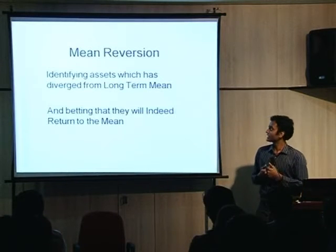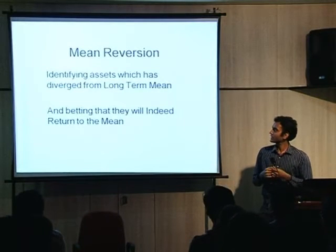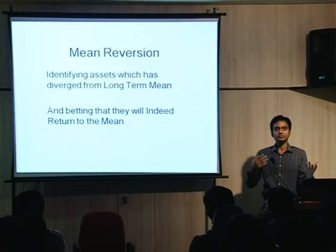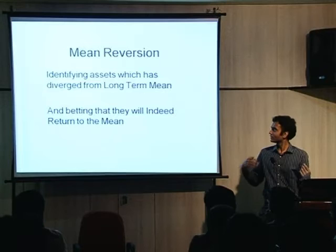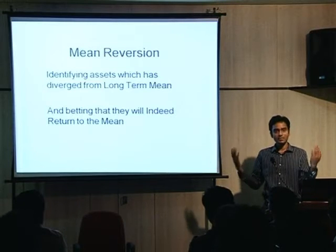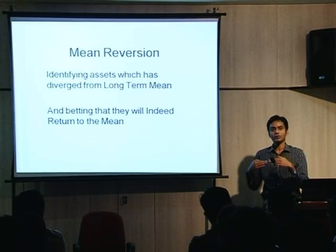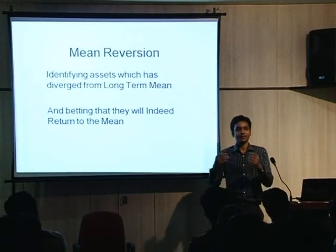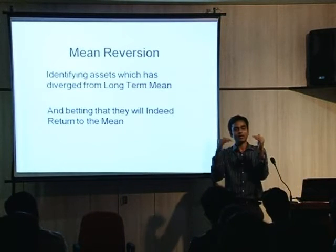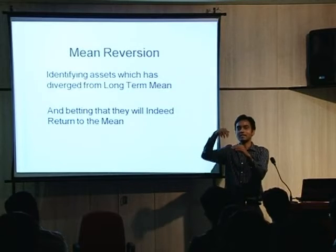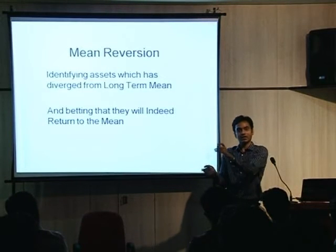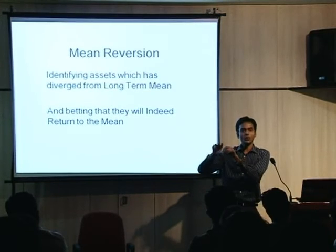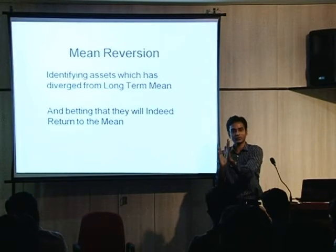Mean reversion is essentially identifying the short-term fluctuations from the long-term mean and making a bet that they are going to revert to the mean. Of course, you could also say that after it hits the mean it will diverge again and bet on that — but the point is that it's difficult, you don't know when to stop. So it's always better to trade the reversion rather than the divergence.